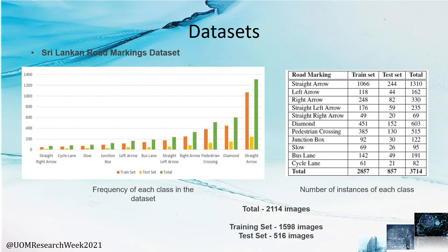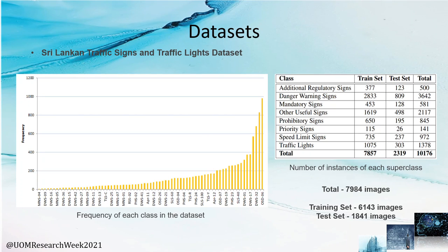Here is a summary of the created datasets. The road markings dataset was completed with a total of 2,114 images. The table shows the number of instances while the graph shows the distribution of the number of instances for each of the 11 classes. Next, the Sri Lankan traffic signs and traffic lights detection dataset contains a total of 7,984 images with 70 traffic sign classes and 5 traffic light classes. The table shows the number of instances for the 8 super classes, and the graph shows the distribution of the number of instances across all classes.